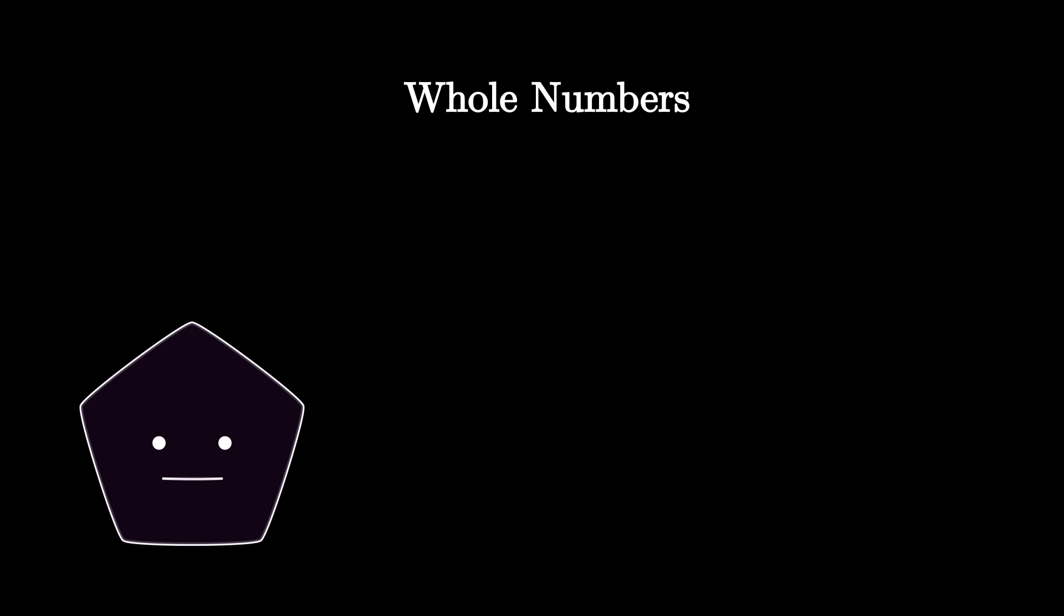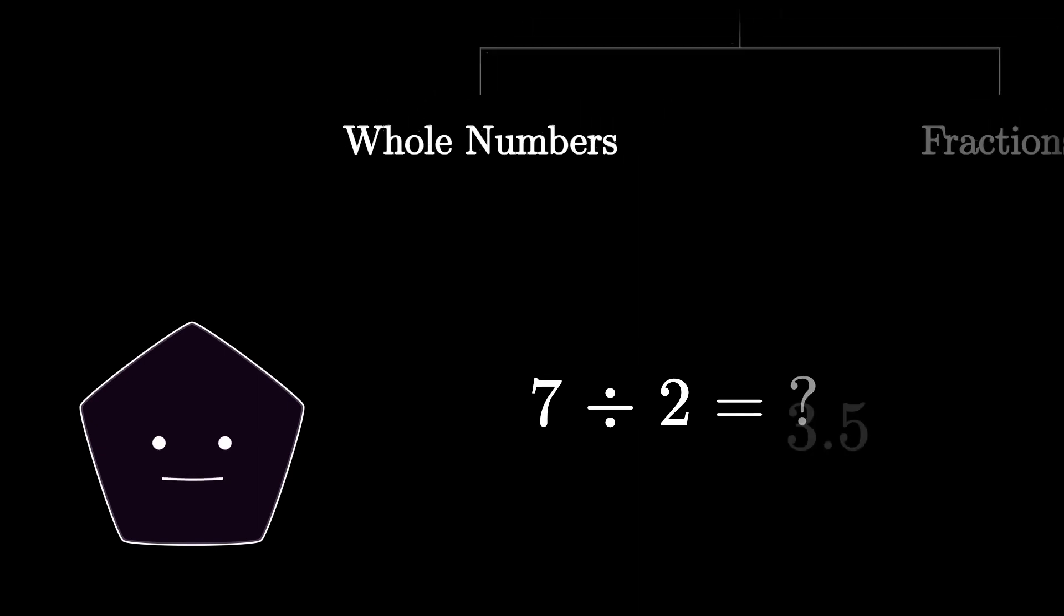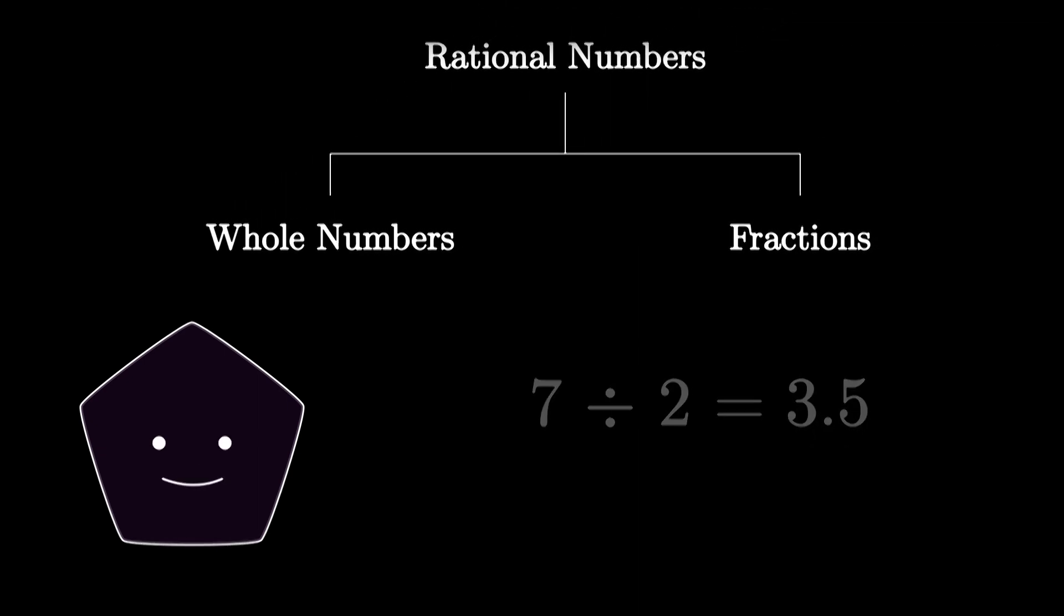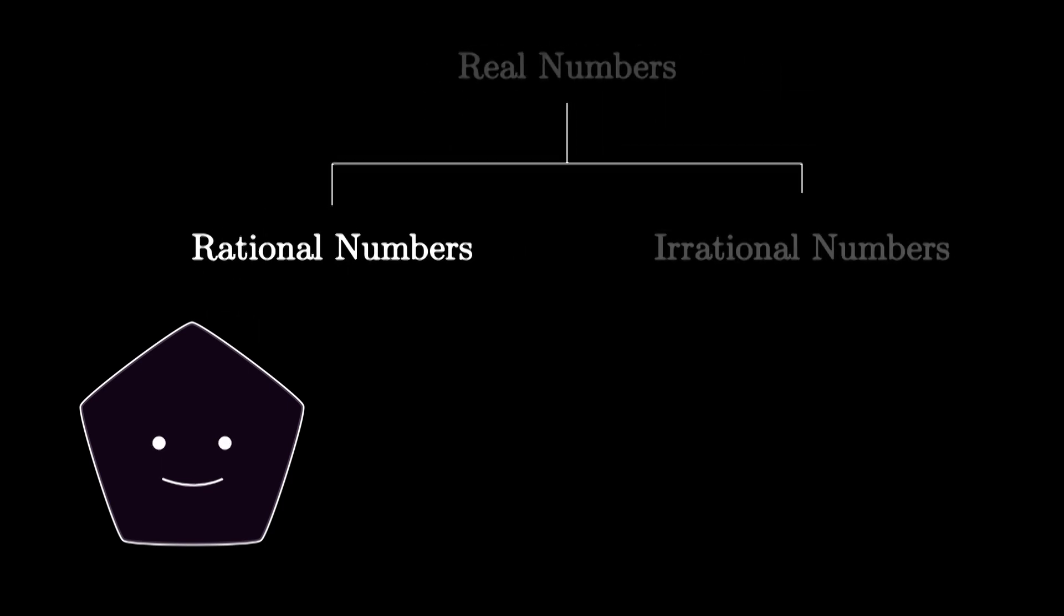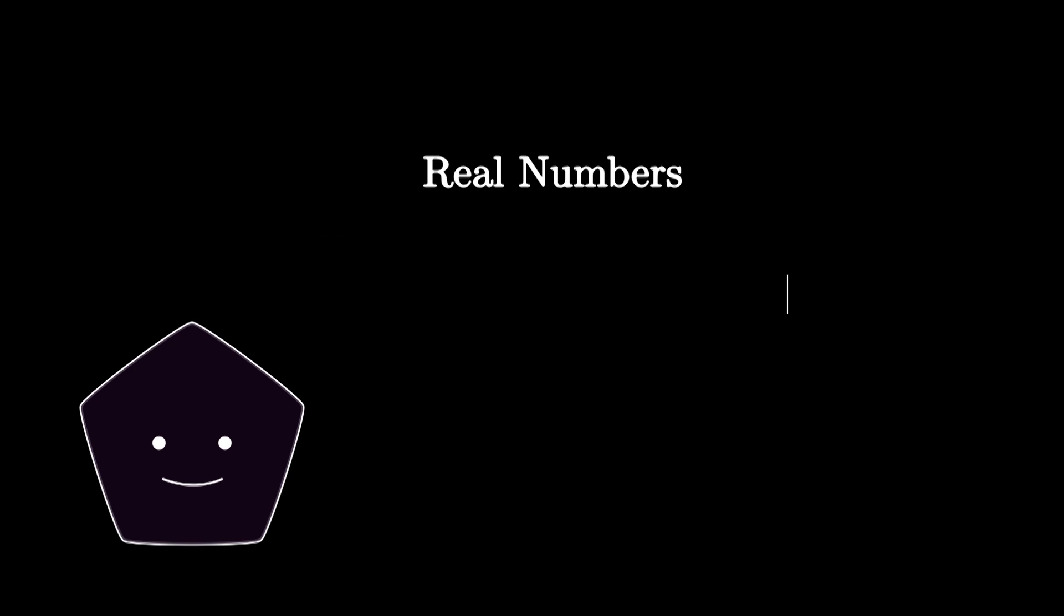In the same way, we noticed that division also has a problem. Some cases like 7 divided by 2 do not give us integers. To fix this we added fractions to the map, and in this way we started fixing all our problems until we became satisfied with the real numbers. We said to ourselves, yes we did it, there's nothing else we need to worry about.